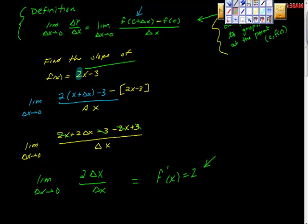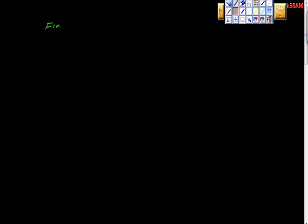That was a really simple example, intentionally, because it gets much more difficult and less obvious — you have to start to really trust what you're doing. So let's try a difficult one. If you can do this you're in great shape. Let's find the derivative where f(x) = x³ + 2x.